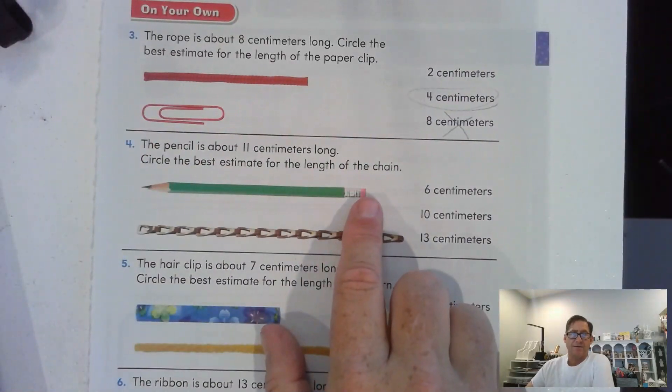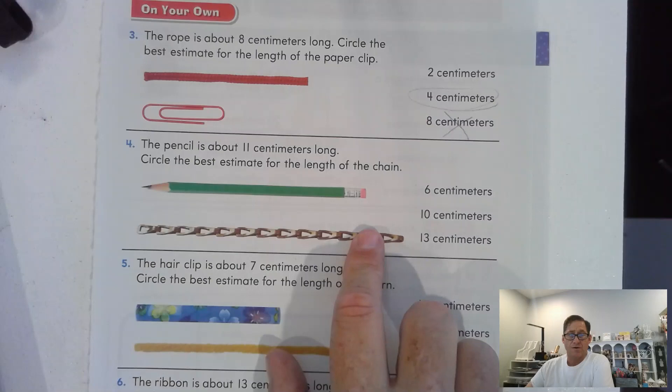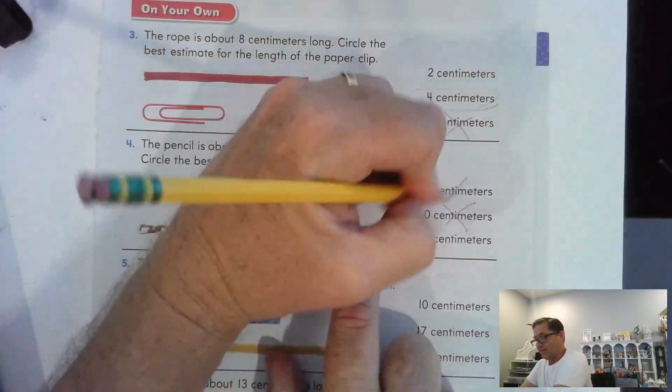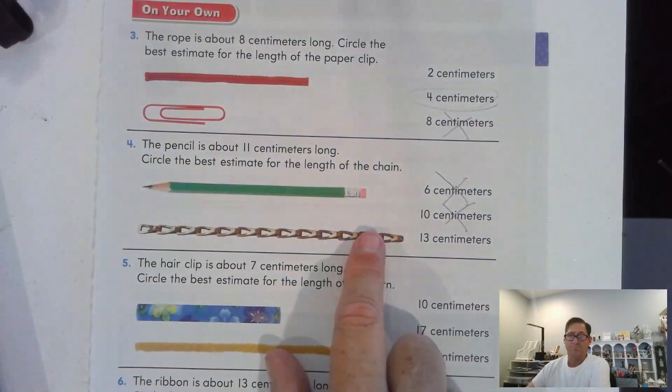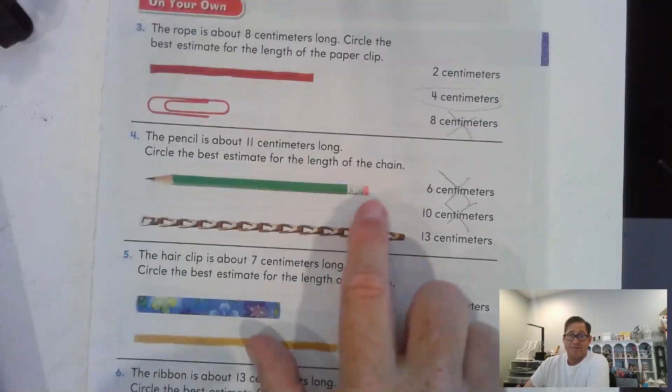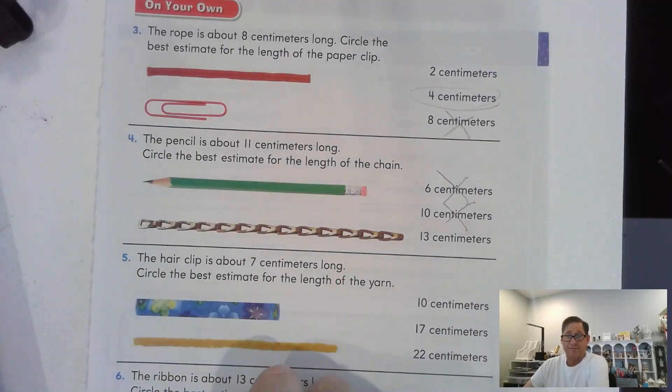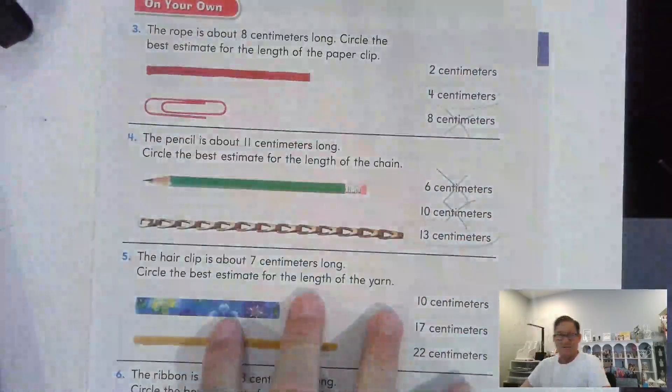This pencil is about 11 centimeters long. Circle the best estimate for the length of the chain. So, the chain is longer than the pencil. So, it can't be that one and it can't be that one. Just common sense tells us that we have to have a number greater than 11. So it's got to be 13.